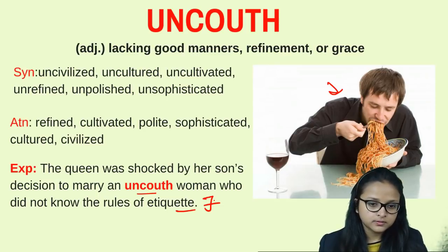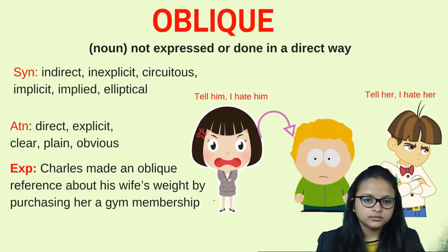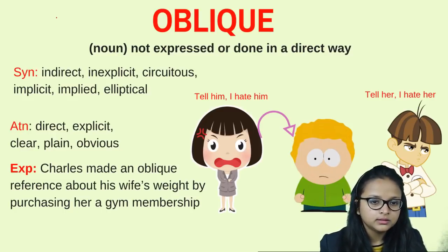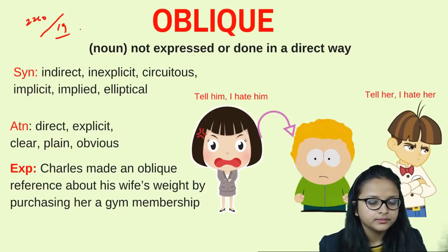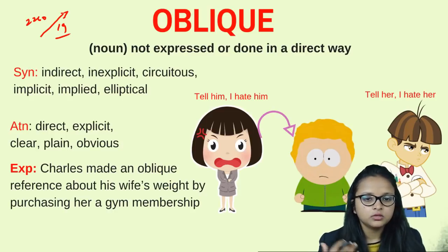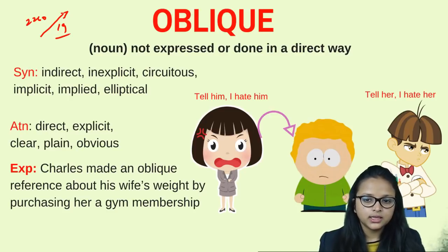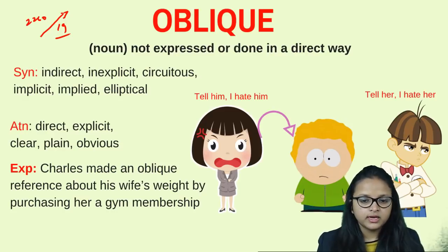The third word is 'oblique.' In writing, oblique is a slanting line — like 22/19. In general use, oblique means not expressed or done in a direct way; something that is not straight or clear — an indirect manner.